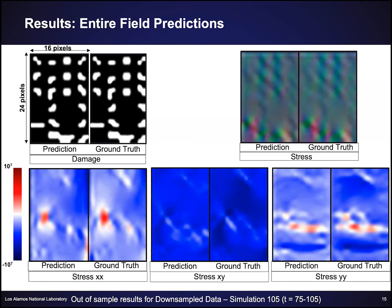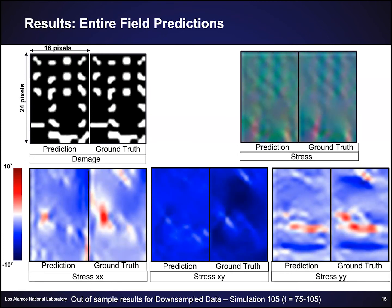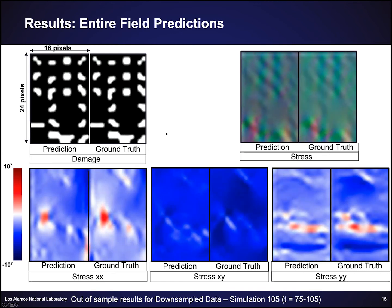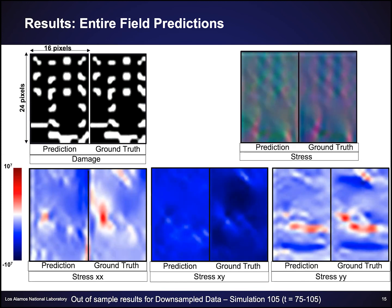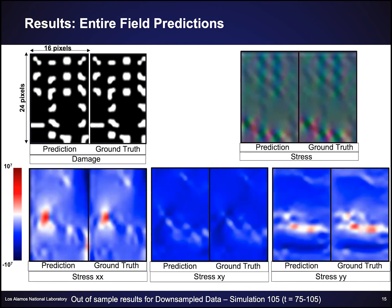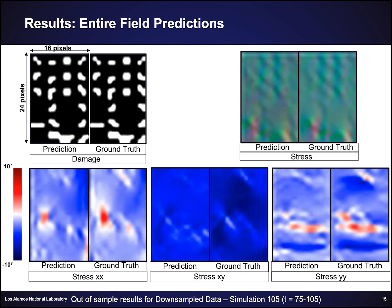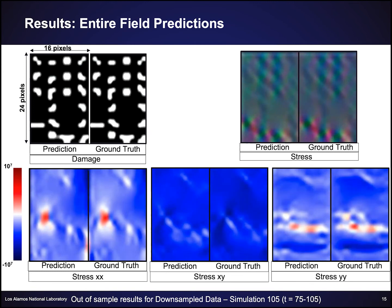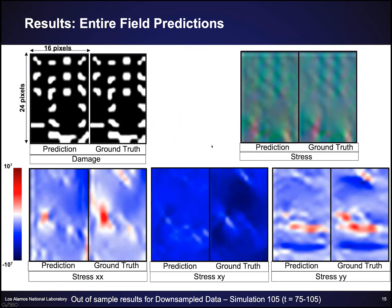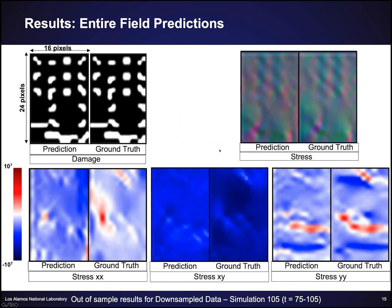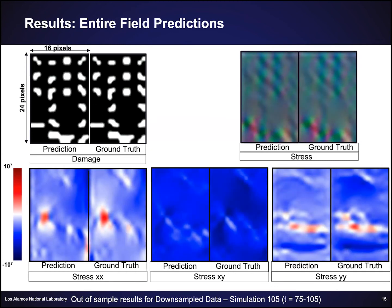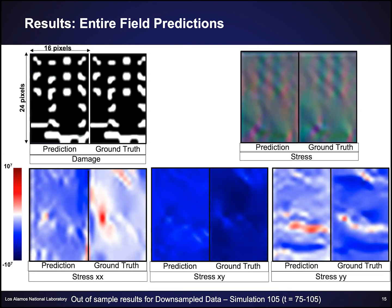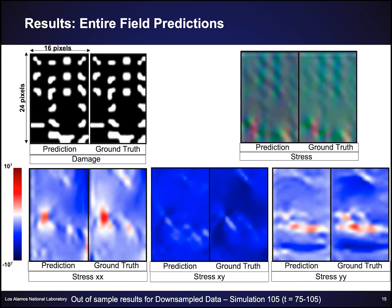A video shows model performance. The damage — black and white image — shows predictions on the left and ground truth on the right. Predictions are fairly accurate in terms of damage; sometimes we actually predict damage happening slightly earlier than it really does, but generally we get the right places at close to the right time. The stress is shown in false color combining three directional components. Overall, qualitatively the predictions are pretty close to ground truth.